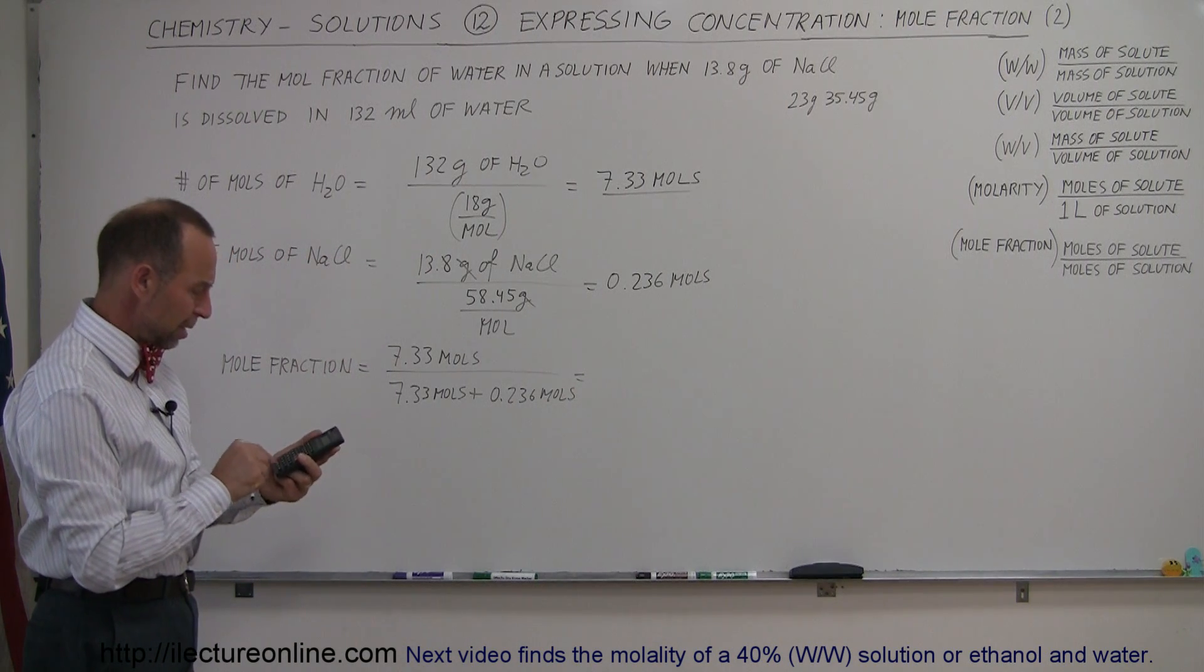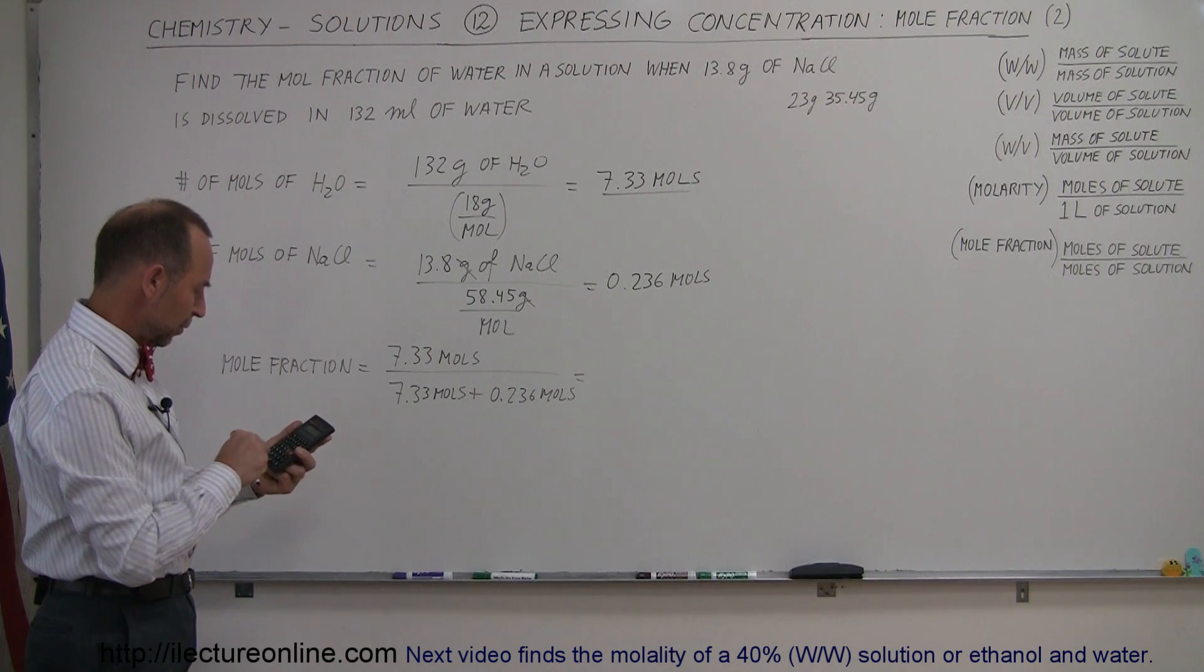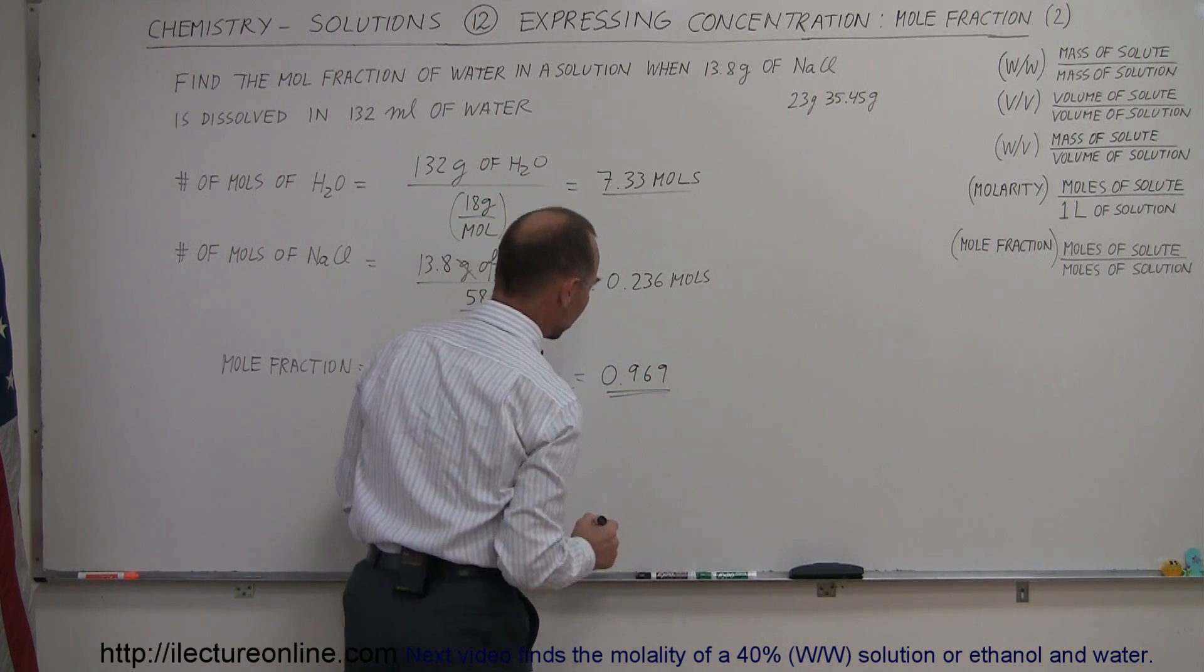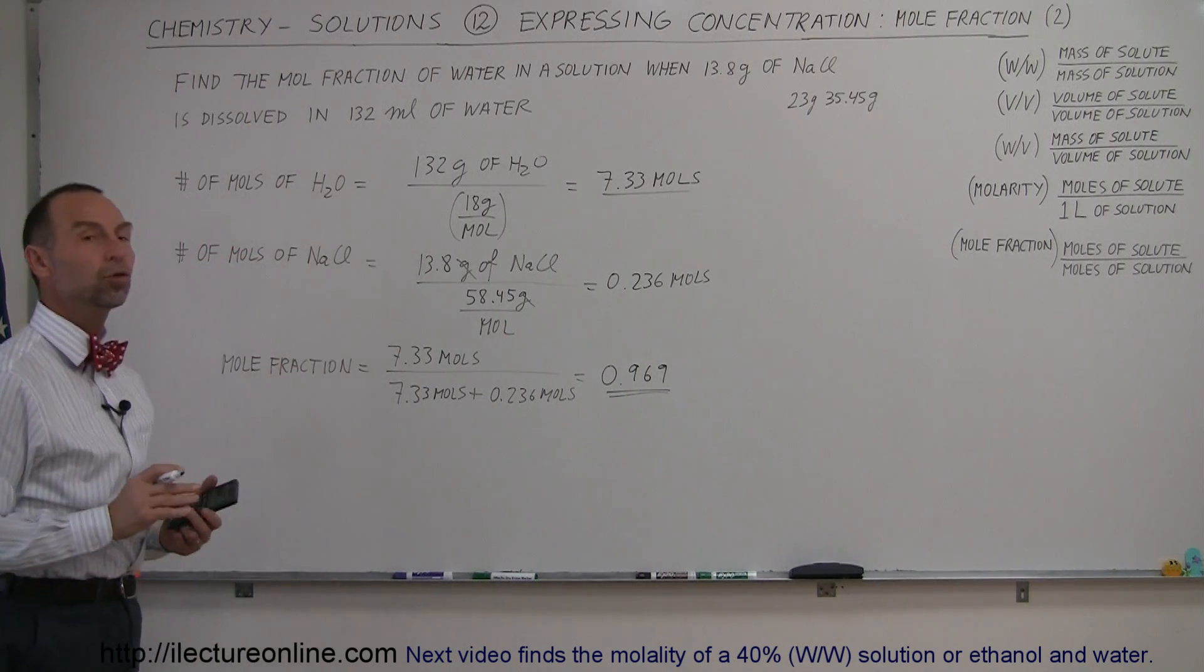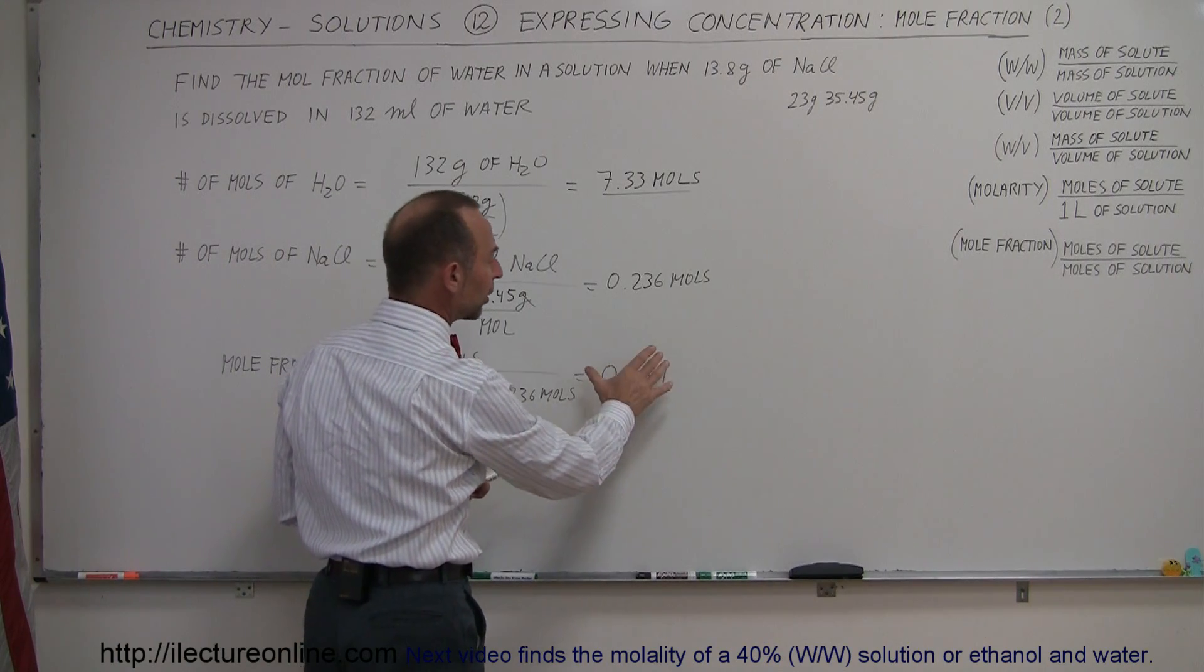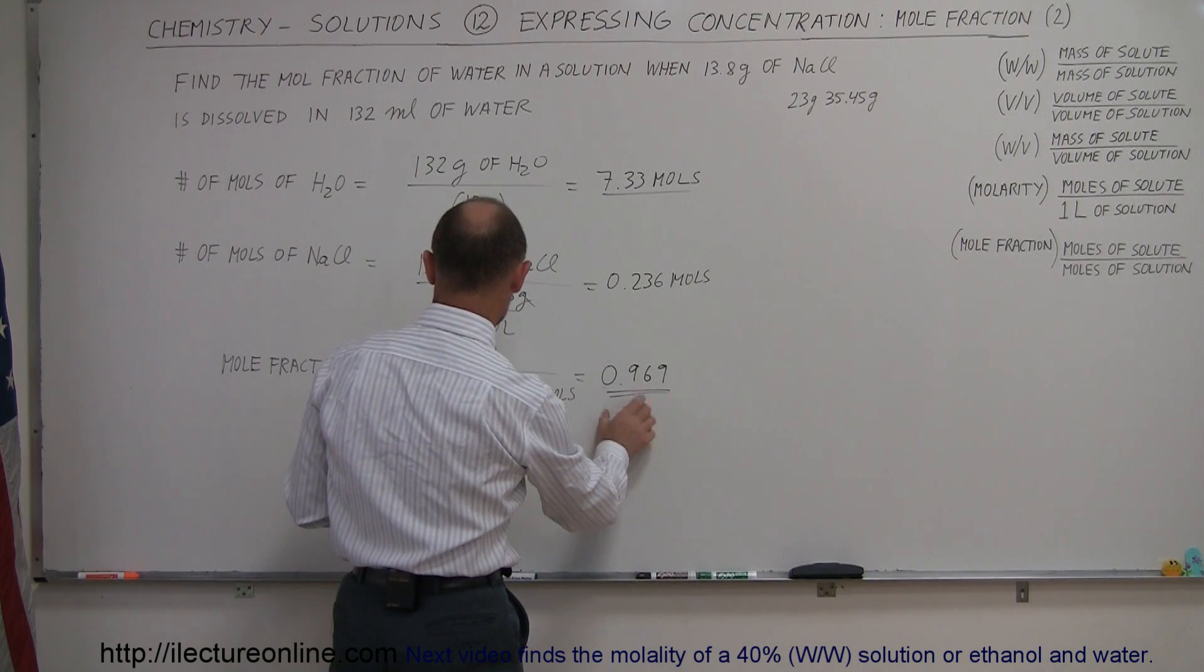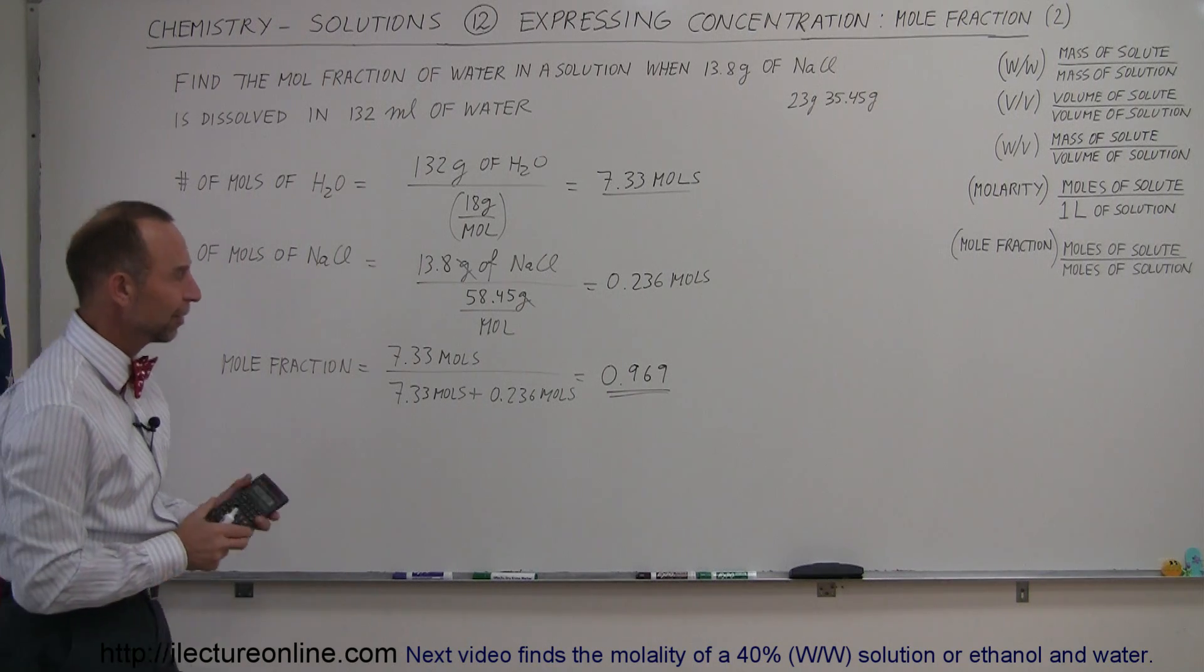We take the inverse of that and times 7.333 equals... it looks like it's about 0.969, and that's the fraction. So that means it's the mole fraction of water to the whole solution. 96.9% of all the moles in the solution are water, and the rest of it, a small percentage... about 3.1% of the moles in there are sodium chloride. That's the way to look at it.